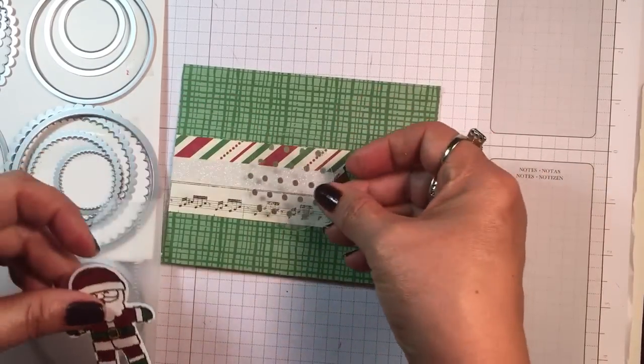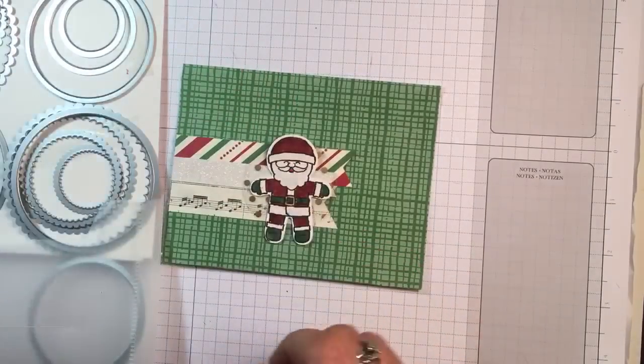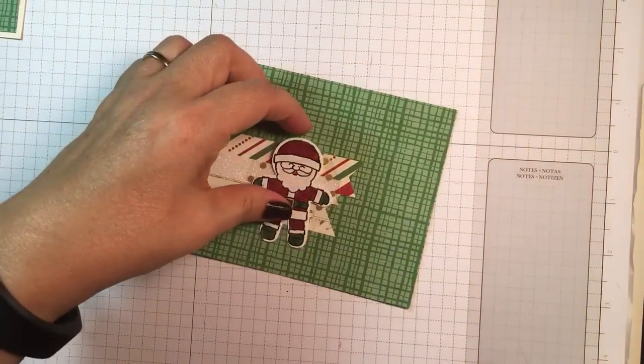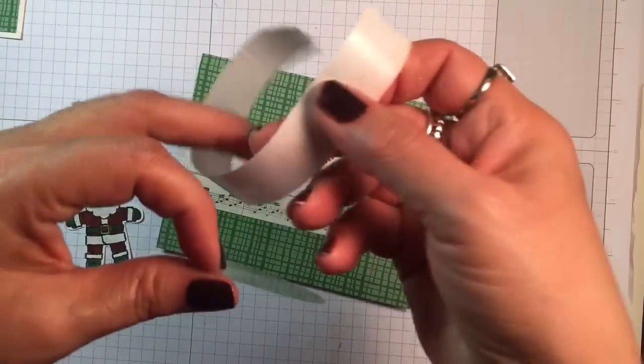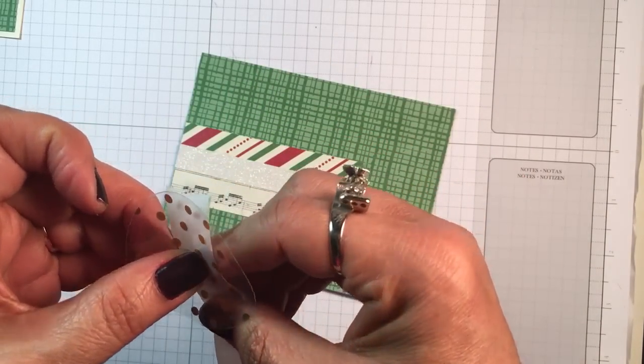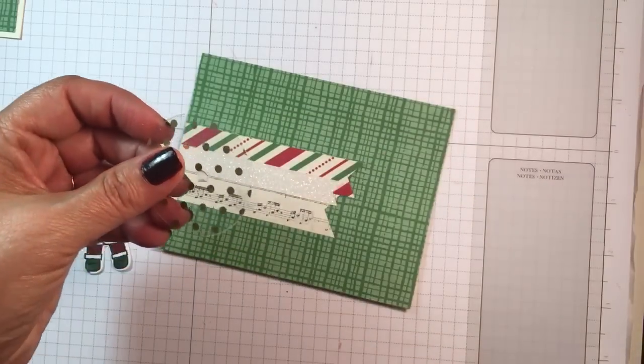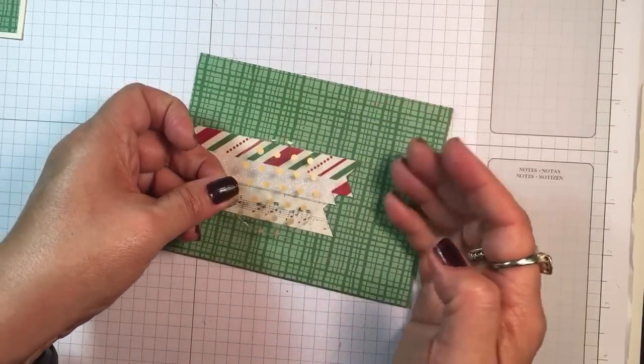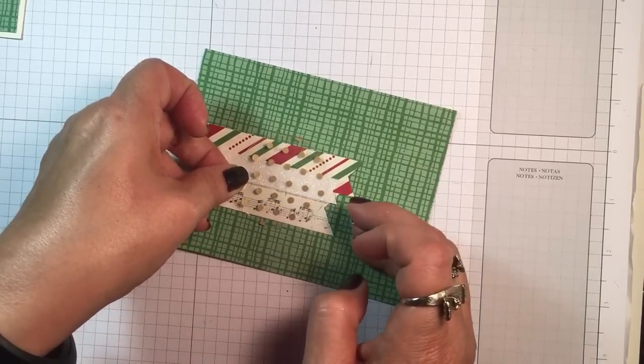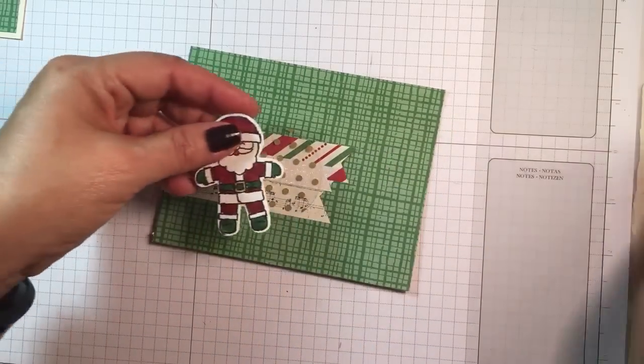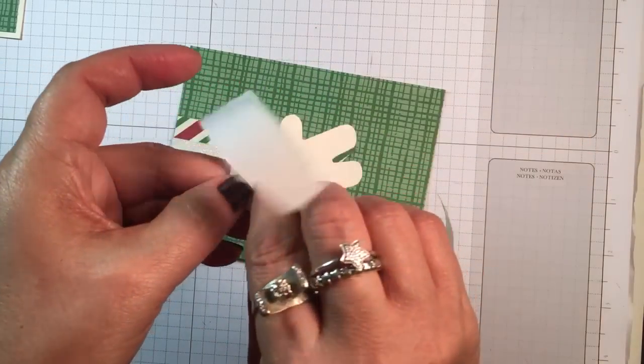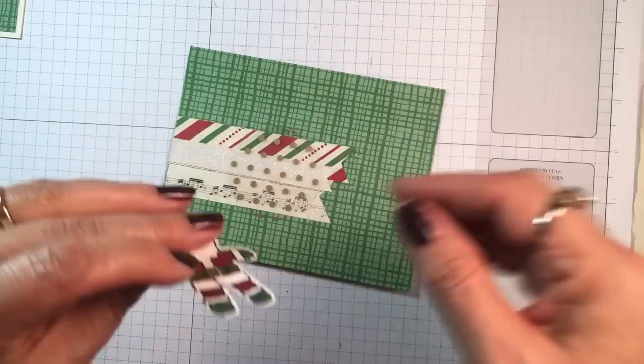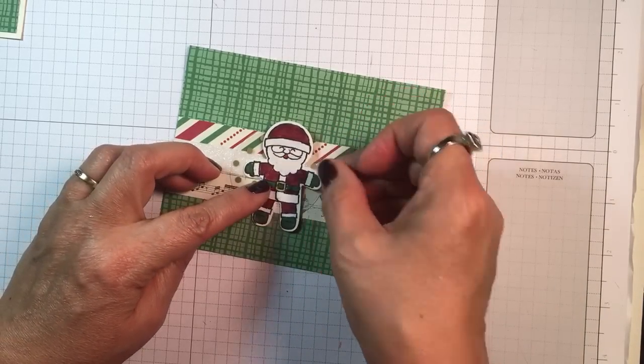I'm gonna put that behind Santa to give him a little bit of backing. So that my adhesive won't show, I'm gonna use a glue dot right in the middle of the circle just like that. I want to come over here to the right side of these banner pieces because I'm going to be tying some twine over here on this side. Let's go ahead and use some glue dots on Santa and just position him like that.